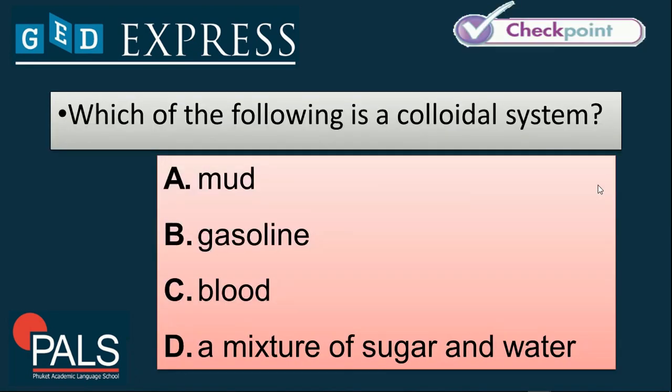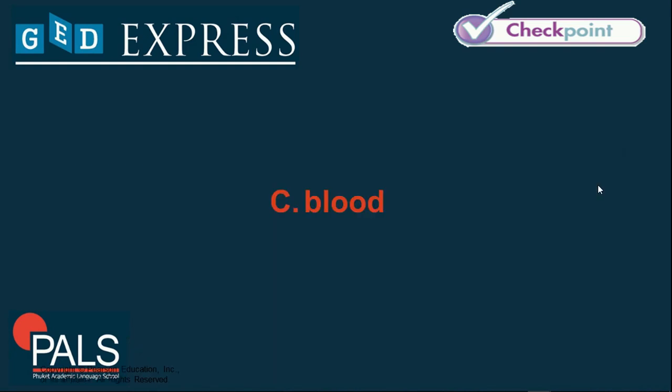Which of the following is a colloidal system: mud, gasoline, blood, or a mixture of sugar and water? The answer is blood, which is a colloidal particle, as mentioned in the previous examples.